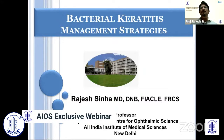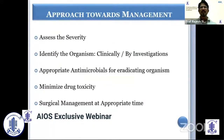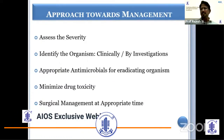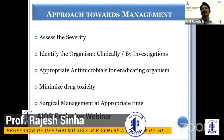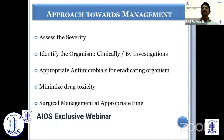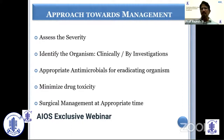I would like to present on management strategies of bacterial keratitis. The approach towards management for any infectious disorder is to assess the severity first. Severity guides our treatment as well. But the most important thing we have to do in infectious or microbial keratitis is to identify the organism, either clinically or by investigations or by both. Then only we can have appropriate antimicrobials for eradicating the organism. While treating, sometimes we overshoot our aim — we give a lot of drugs — so we have to be judicious and minimize drug toxicity. And if nothing is working and the cornea has perforated, then we have to resort to surgical management.